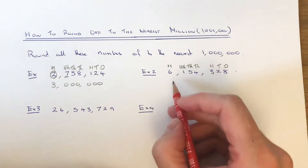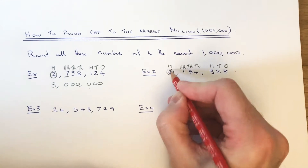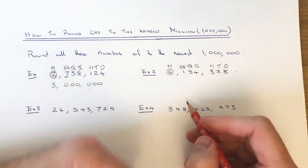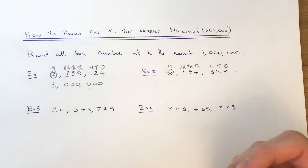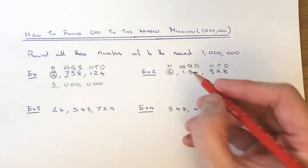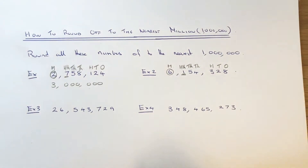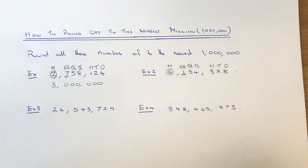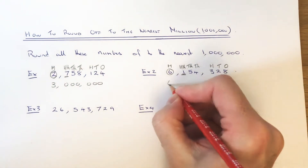So at the moment we've got 6 million. Our two choices would be 6 million if you round it down, or 7 million if you round it up. We just need to look at the next column to decide. Since it's a 1, that number is less than 5, so we round the number down to 6 million.